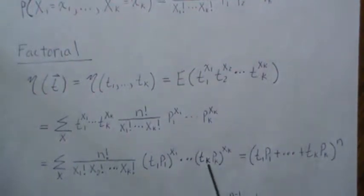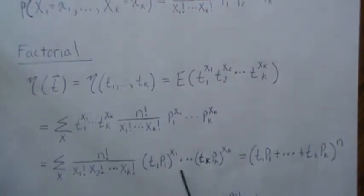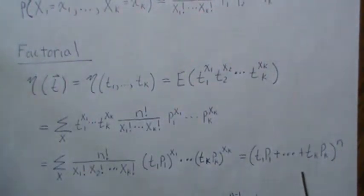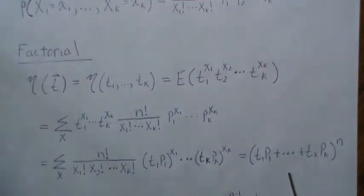The exponents are the same as exponents here, so we can combine those. This comes down and then we combine the t's and the p's to this. This is still a binomial expansion, which is this. So it's t1 p1 plus all the way to tk pk raised to the n. So this is the factorial moment generating function.